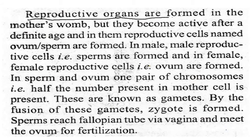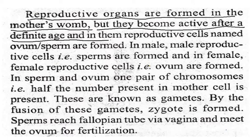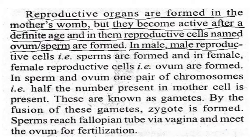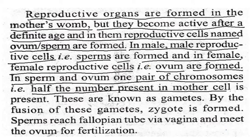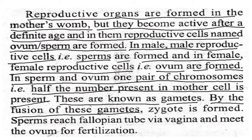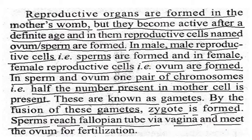Reproductive organs are formed in the mother womb but they become active after a definite age. Reproductive cells named ovum and sperm are formed — in male, reproductive cells (sperm) are formed, and in female, reproductive cells (ovum) are formed. In sperm and ovum, one pair of chromosomes — half the number present in the mother cell — is present. These are known as gametes. By the fusion of these gametes, a zygote is formed. Sperm reaches the fallopian tube via vagina and meets the ovum for fertilization.